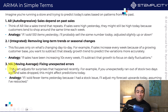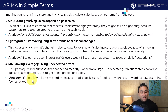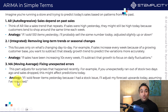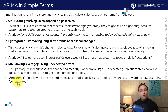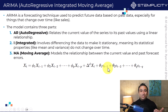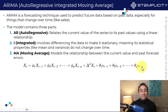The Moving Average piece works by fixing unexpected errors. For example, if I sold fewer items yesterday because of a stock issue, I'm going to adjust my forecast upwards today, assuming that I have restocked. The idea is to adjust for past mistakes or past errors. Looking back at the equation, theta 1 times error at t minus 1 represents the mistakes made in the previous timestamp, plus theta at t minus 2, and so on up until t minus q.